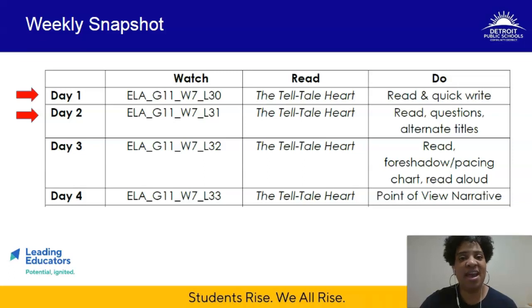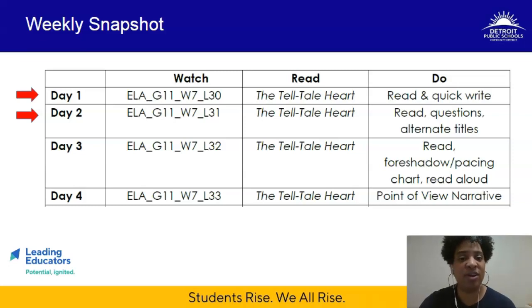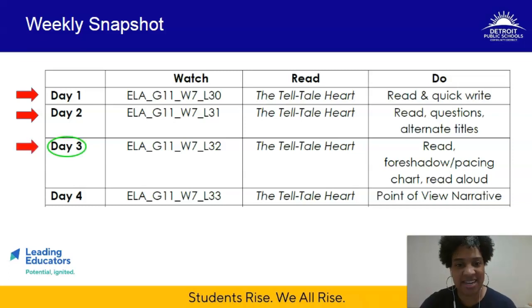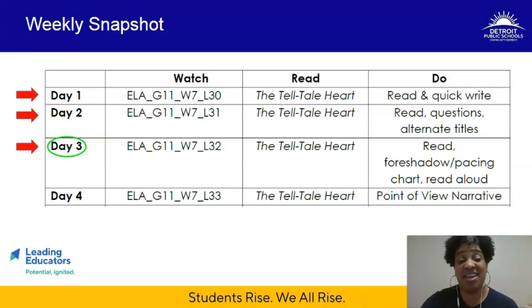So far this week we have been engaged in analyzing the craft and structure of the text. We started on day one with another skim read and a quick write. Day two we did some additional reading, reviewing of our annotations, responded to some really good questions, and generated an alternate title for the text. Today we're going to continue our analysis of the craft and structure looking at foreshadowing and pacing, and then you're going to engage in a read aloud.